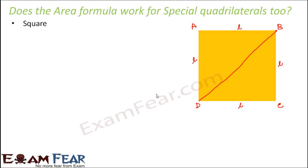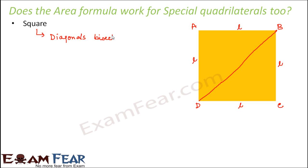The moment we draw diagonal BD, we divide the square into two triangles. One important thing about a square is that, since it is a special quadrilateral, it has special properties: all its sides are equal, all its diagonals are also equal, and the diagonals bisect each other at 90 degrees. So if we draw diagonals BD and AC, they bisect each other at 90 degrees — and that is one property which will help us.